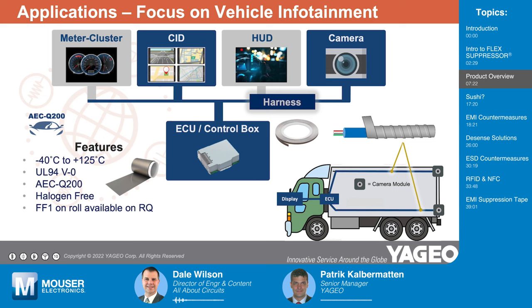How thin is this material? It can be down to 0.01 millimeter, up to 0.1 millimeter, or even thicker. The thicker you have it, the more it will be performing. But you don't want it too thick because of space constraints or cost. So the game is to find the perfect thickness for your application, to have the most efficient effect.